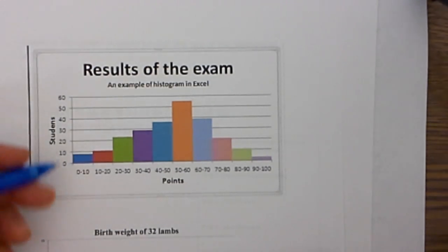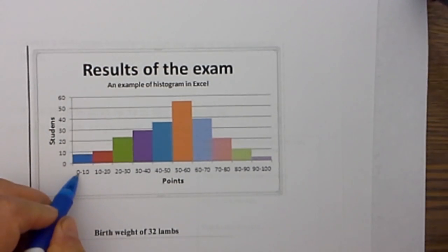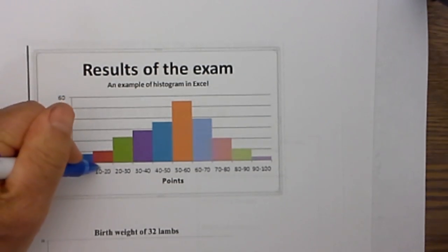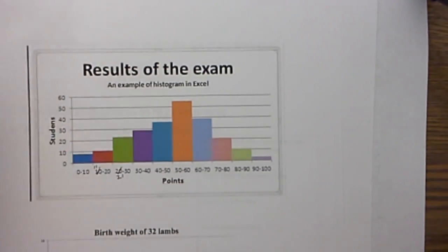Now there is a mistake with these intervals, because you have 0, 10, and 10, 20. These would be overlapping, so this would need to be 11, this would need to be 21.